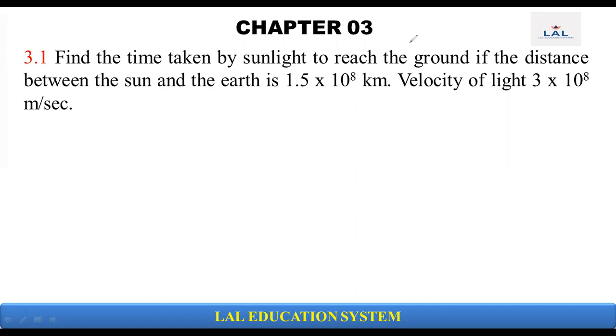Hello students, today we are discussing chapter 3, the first problem, in which we have to find the time taken by sunlight to reach the ground if the distance between sun and earth is 1.5 × 10^8 km.